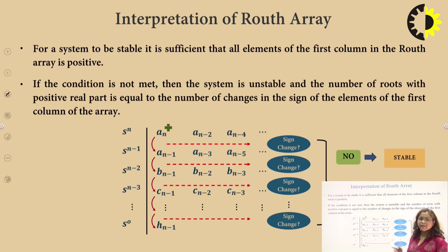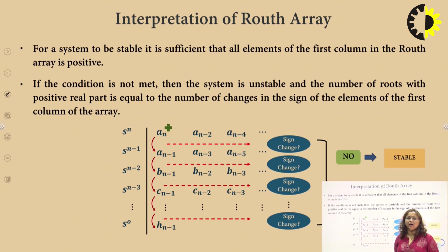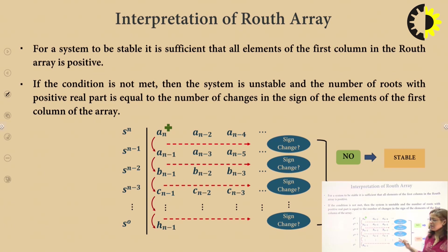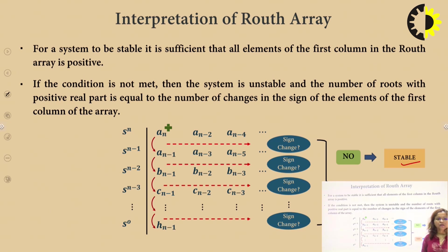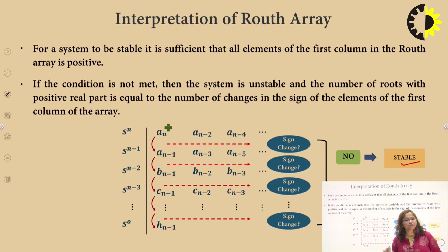Regarding stability: if all the coefficients of the first column are of the same sign — that is positive with no sign change — then the system is stable. And if there is a sign change, then the system is unstable. The number of sign changes in the first column gives the number of roots in the right half of the s-plane.